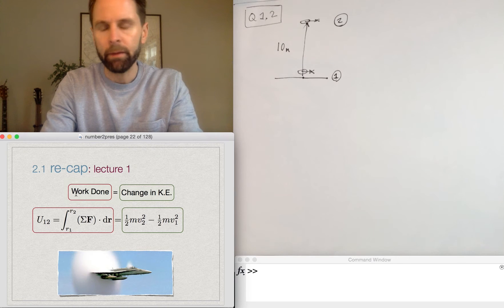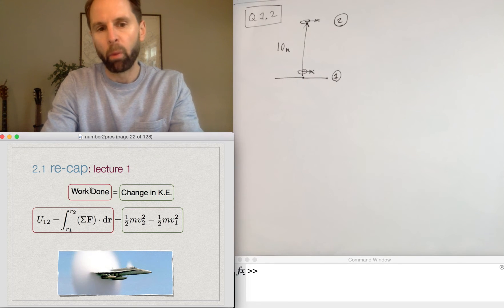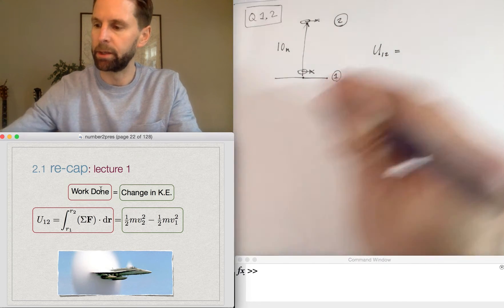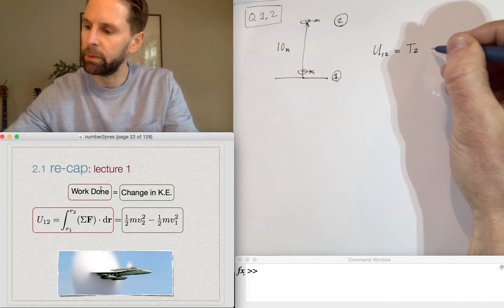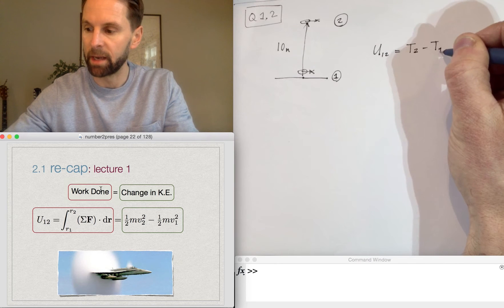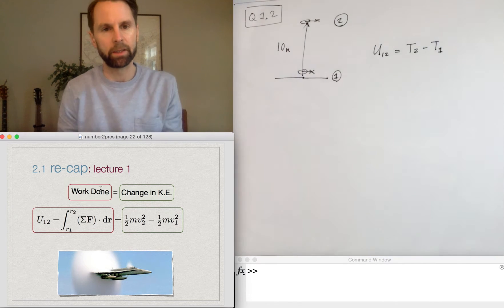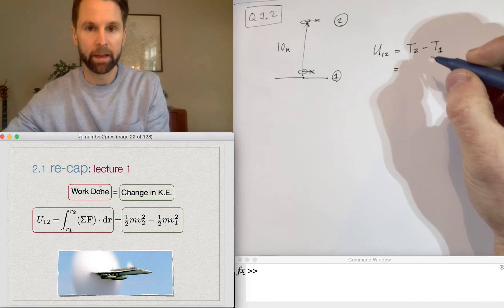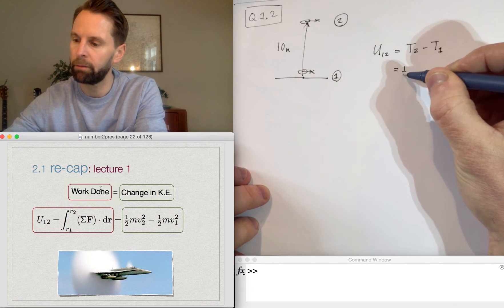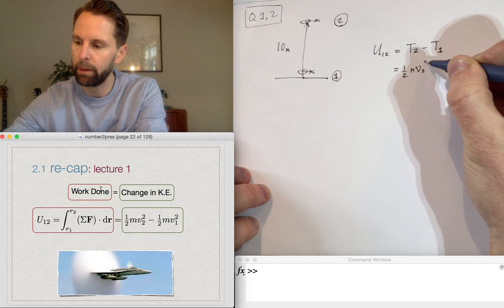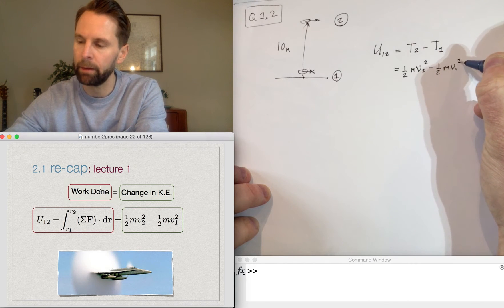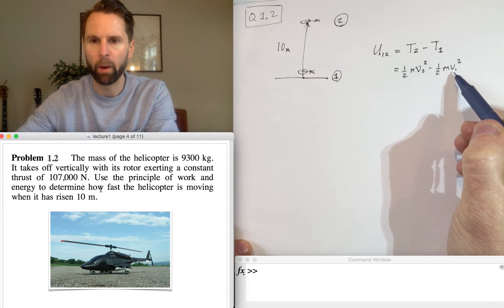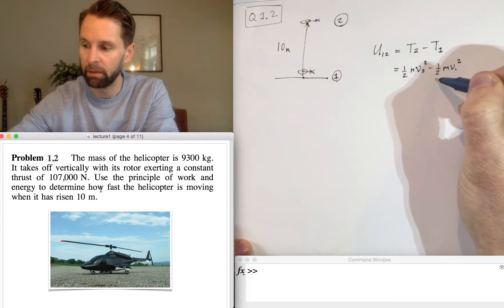Essentially we want to work out what the work done is between position one and position two, because that will equal the change in kinetic energy. I'll use the shorthand that T2 minus T1, so T is kinetic energy, is the change in kinetic energy. If I write expressions for kinetic energy, then we have 1/2 m v2^2 minus 1/2 m v1^2. Because it's taking off, the initial speed v1, the speed when it's on the ground, is zero.